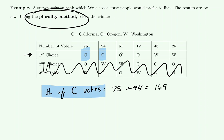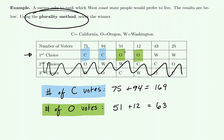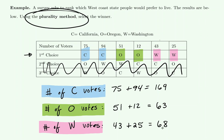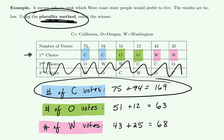The number of people who preferred Oregon first includes two groups: 51 people chose Oregon first with Washington second and California third, and 12 wanted Oregon first with California second and Washington third, giving 63 Oregon voters. The final two columns represent voters who preferred Washington first, totaling 68 voters. Since we're looking at a plurality winner, California has 169 votes compared to 63 and 68, so California has the highest number of votes and is the plurality winner.